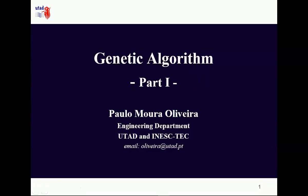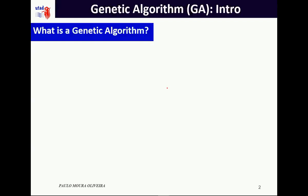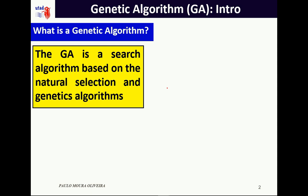In this presentation we are going to speak about the genetic algorithm, part 1. A GA is a search algorithm based on natural selection and genetic algorithms.